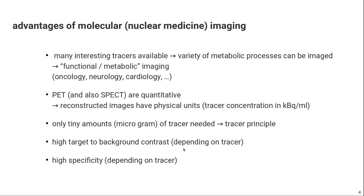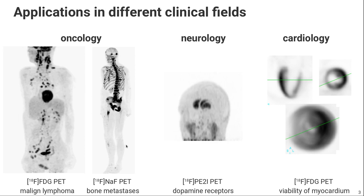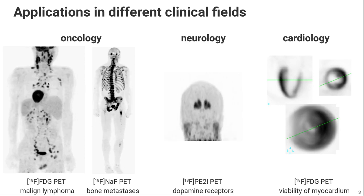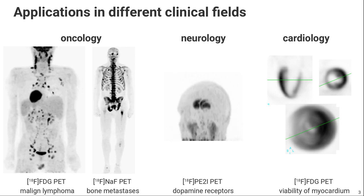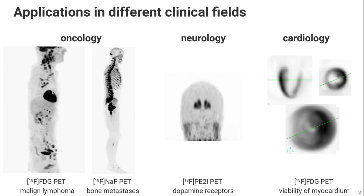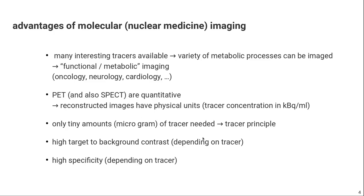Another advantage — depending on your tracer — is that the contrast between your target, such as a tumor, and the background tissue can be very high. Looking back at the left image, you can see visually the very high contrast between the lymphomas and the background tissues, making them easy to detect. This depends on the tracer characteristics, basically the affinity of your tracer. Last but not least, many tracers have very high specificity, so the signal is quite clear, though again that depends on the tracer.